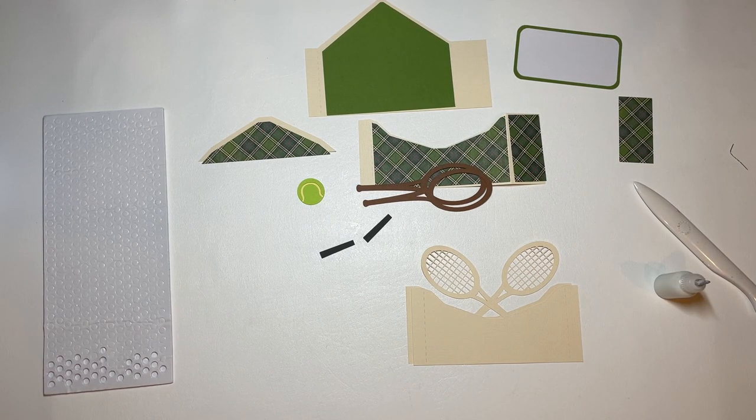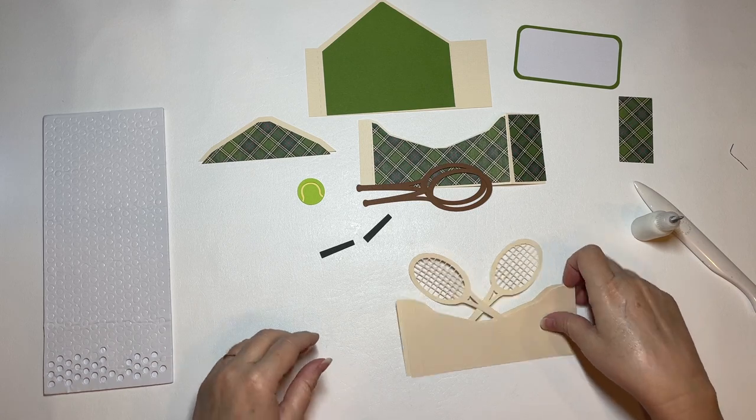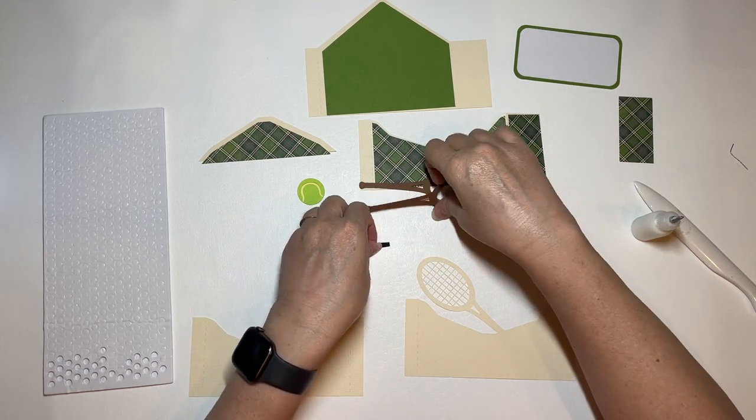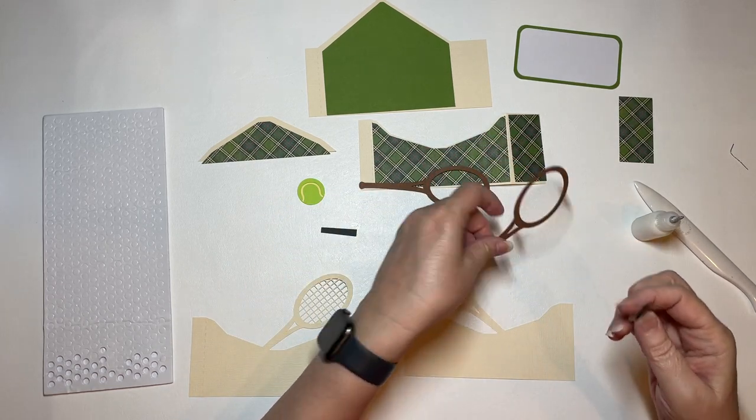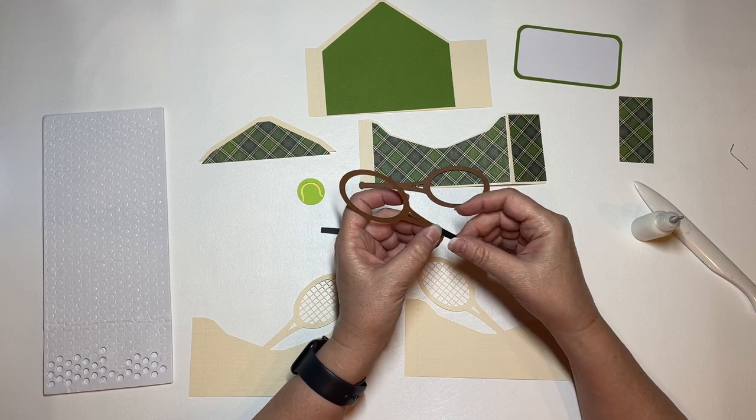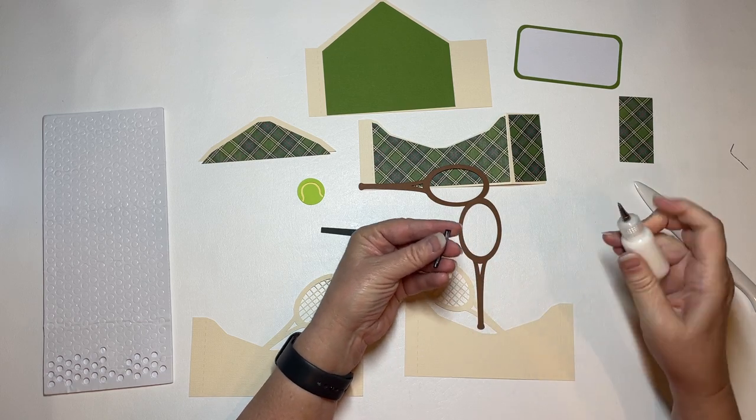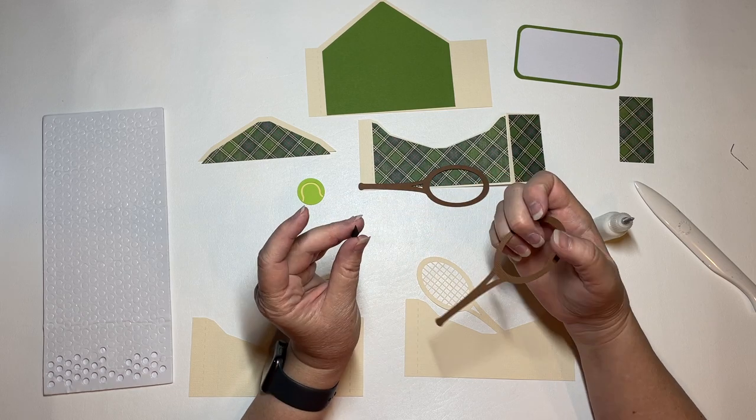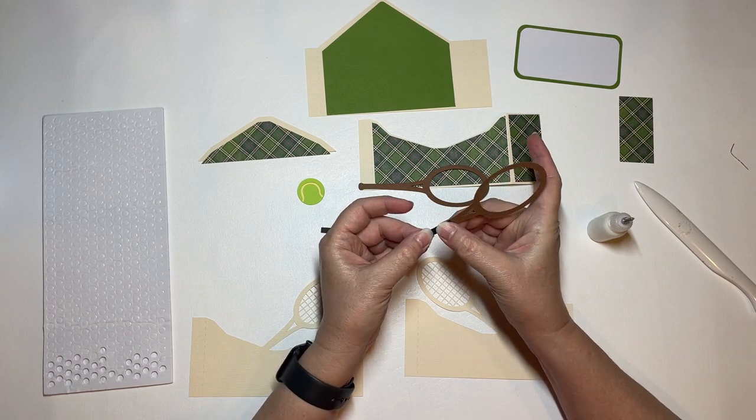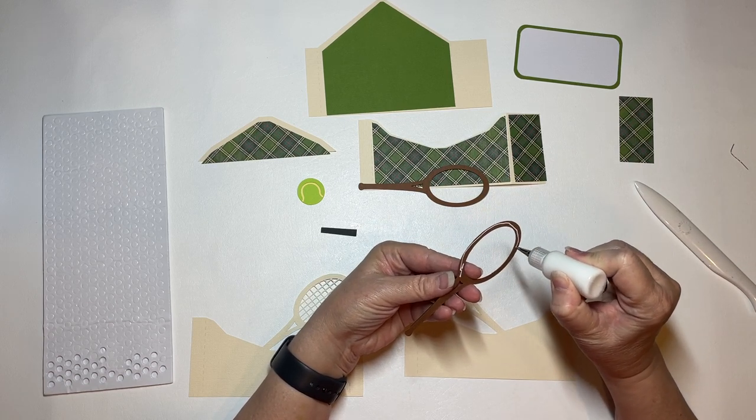This is Cindy G with My Scrap Chick, and in this video we are assembling the tennis box card. So I'm going to start with my racket pieces so that I can slide these under my mat and let them dry a little before we put them together. You don't want to use too much glue, you don't want these to get overly wet.